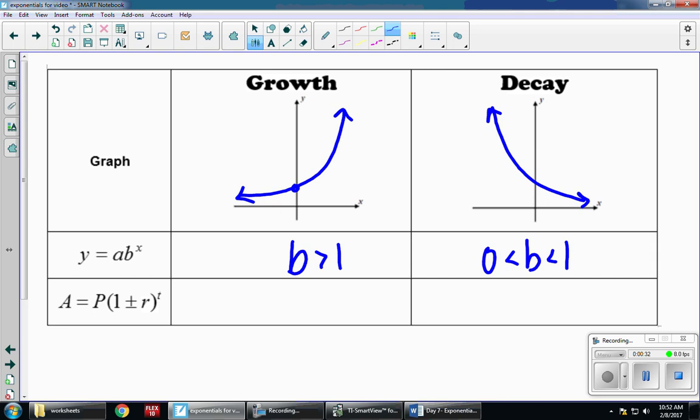So when I have a rate, I'm going to use 1 plus r if it is growing, like interest. Or for decay, I'm going to use 1 minus r if it is decreasing, like bacteria in your body when you're sick and on antibiotics.